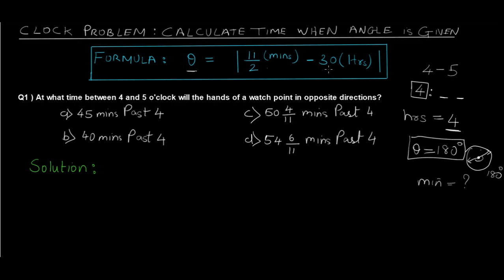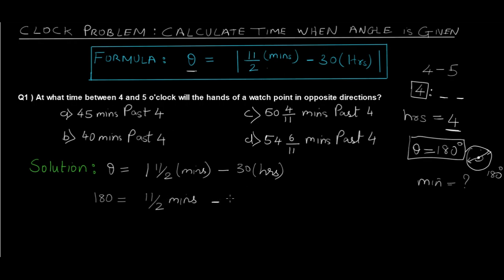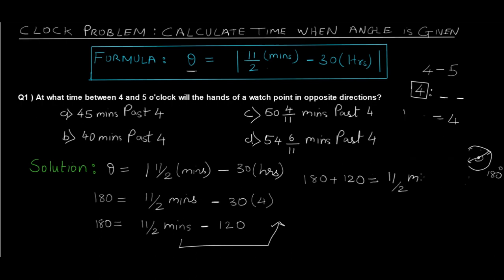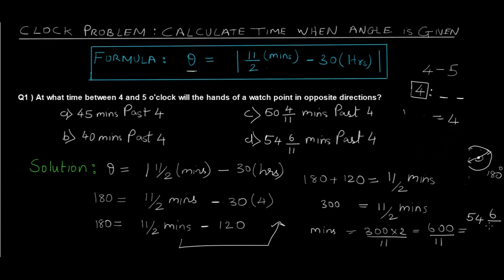Substituting into the formula: 180 = |11/2 × minutes − 30 × 4|, which gives 180 = 11/2 × minutes − 120. So 180 + 120 = 11/2 × minutes, meaning 300 = 11/2 × minutes. Therefore minutes = 300 × 2 / 11 = 600/11. Converting to a mixed fraction gives 54 6/11.